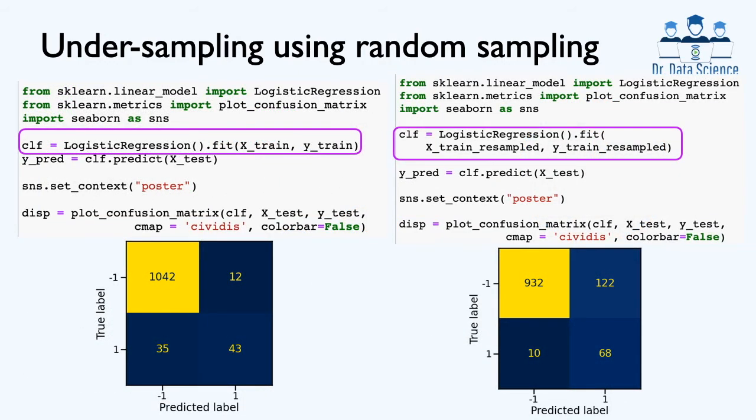Next, we train two logistic regression classifiers on the original imbalanced training data and the resampled data using RandomUnderSampler. The test datasets are used to plot the confusion matrices in both cases. According to these results, we notice that the undersampling technique substantially reduces the number of false negatives. Out of 78 positive samples, we are able to correctly classify 68 of them, which is a major improvement over training a classifier on the original imbalanced data where we had a large number of false negatives.